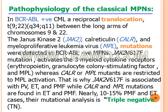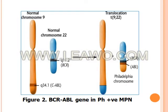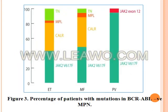However, nearly 10 to 15 percent of primary myelofibrosis and essential thrombocythemia cases have triple-negative mutational analysis. This figure shows the BCR-ABL gene in Philadelphia-positive myeloproliferative neoplasms, and figure 3 shows the percentage of patients with mutations in Philadelphia-negative myeloproliferative neoplasms.